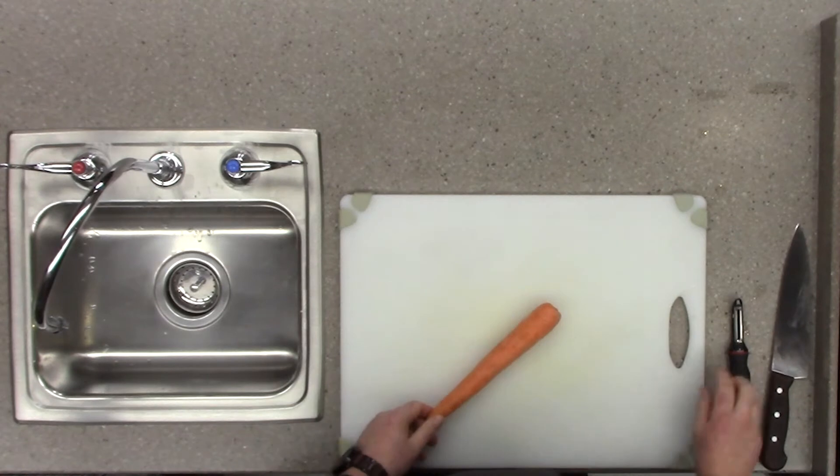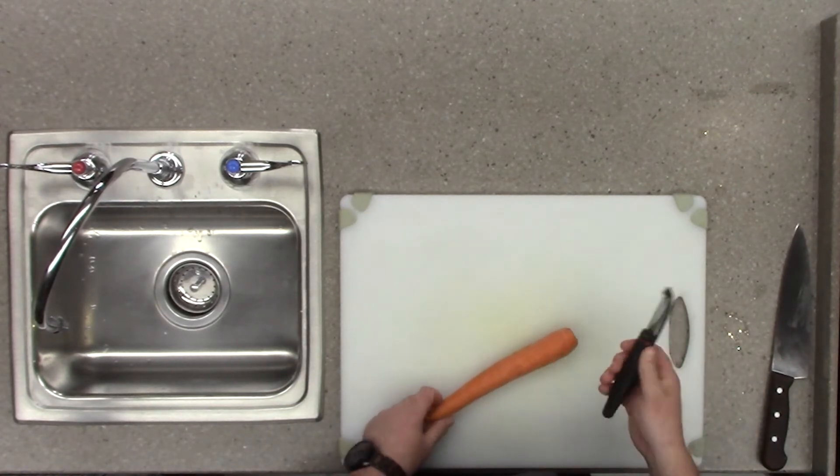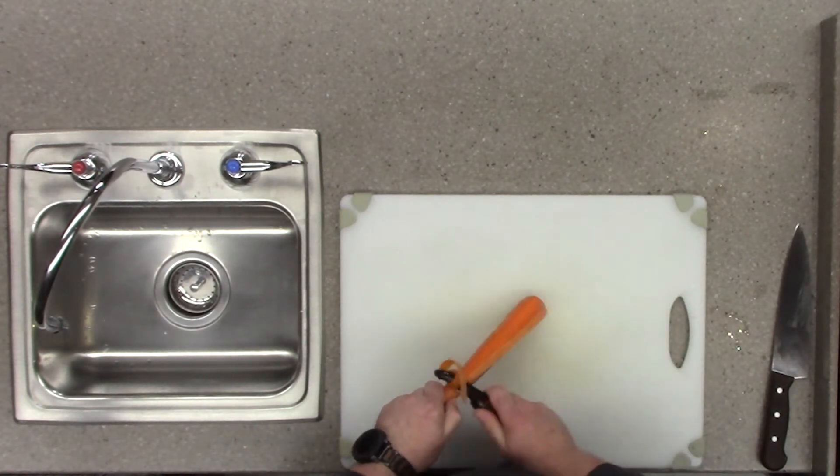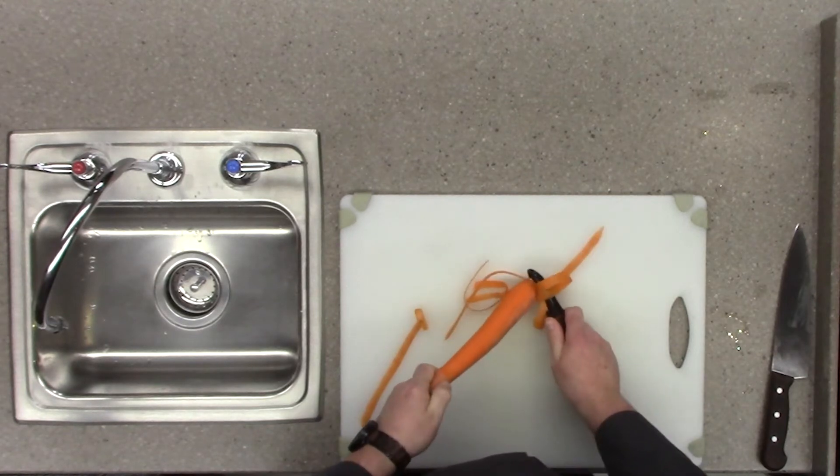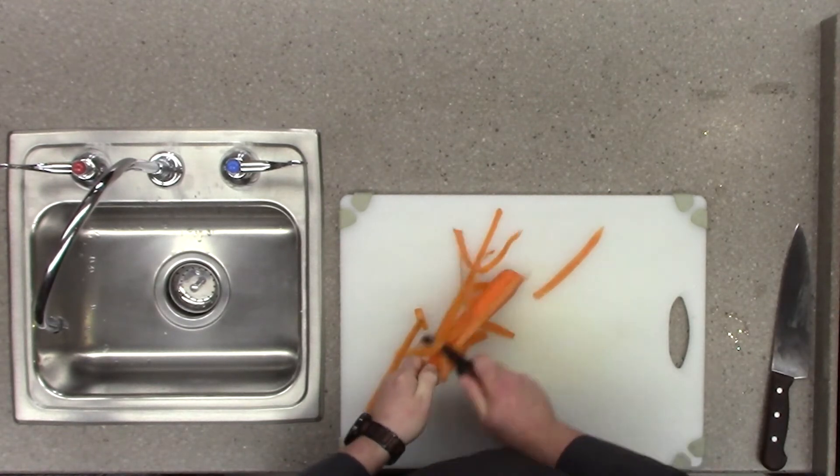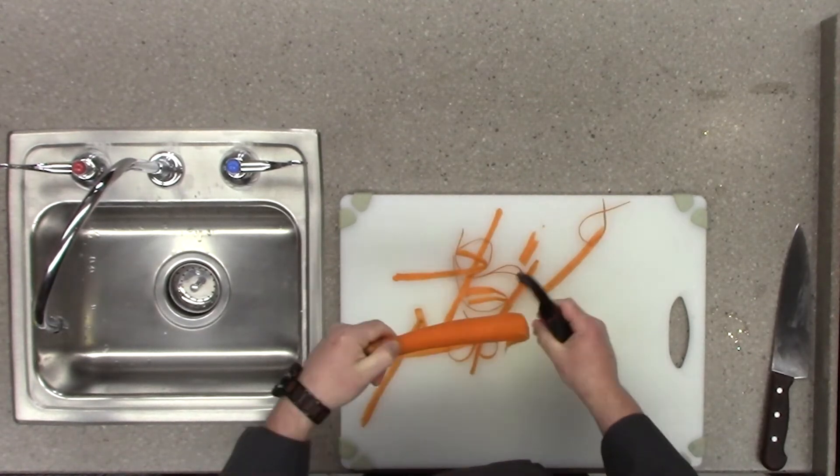So we're going to take our carrot and we're going to peel it. I like to use both sides of the blade of the peeler going up and down. Saves a little time. And most people think it's for a right-handed or left-handed person, but I disagree.